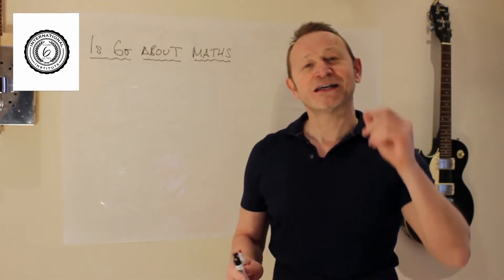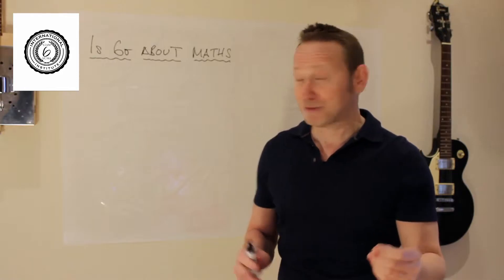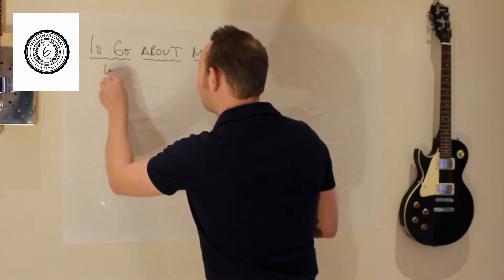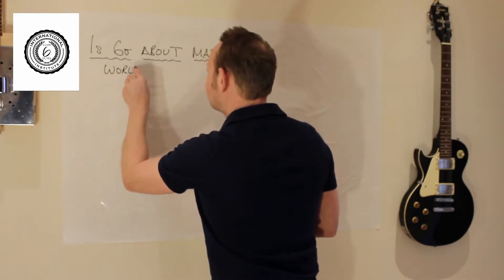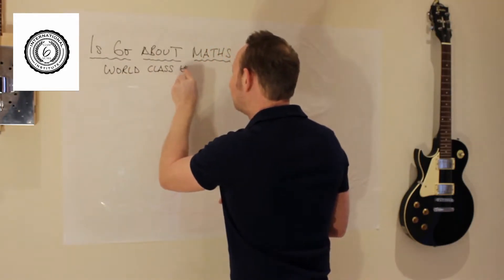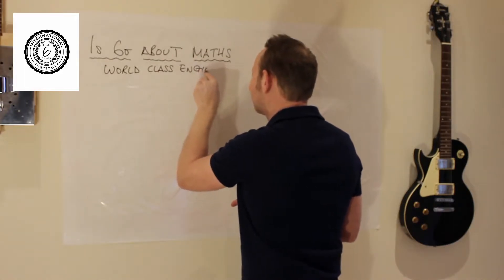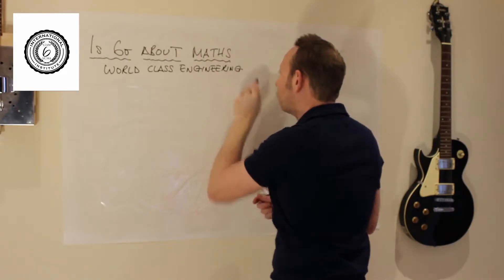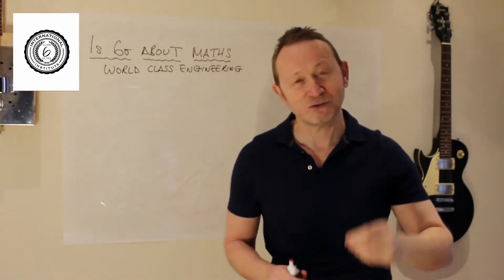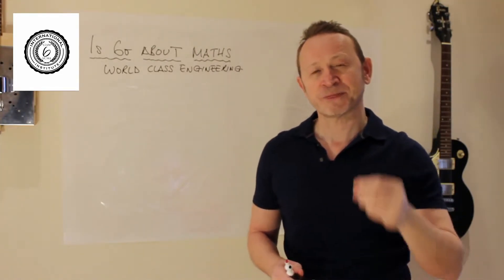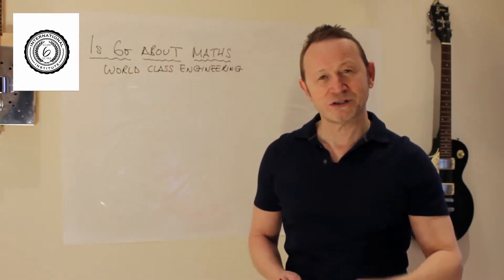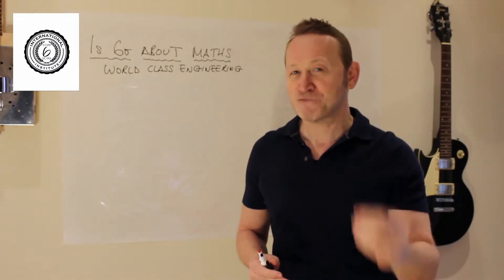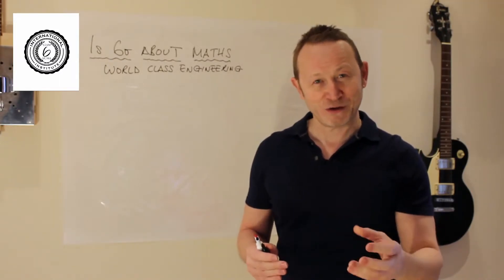But Six Sigma is not about mathematics. I wish we could change this name. Let's call it World Class Engineering because that's what Six Sigma is. It is world class engineering, world class technical problem solving and therefore it's not about maths. Six Sigma is actually about physics and that's very different.